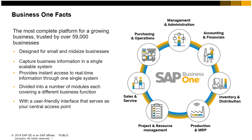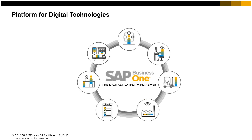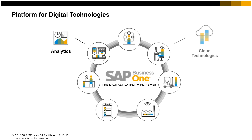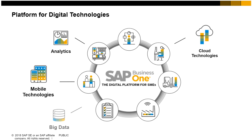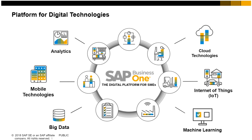Users can also access the system via browsers and mobile devices. SAP Business One supports the technologies that drive today's digital economy. It has analytics that allow you to access the massive amounts of data in today's economy. You can run your business in the cloud or on-premise, and your team can connect via mobile technologies from anywhere in the world. SAP Business One can incorporate data coming from external sensors and other sources, and use innovative technologies to meet today's challenges.